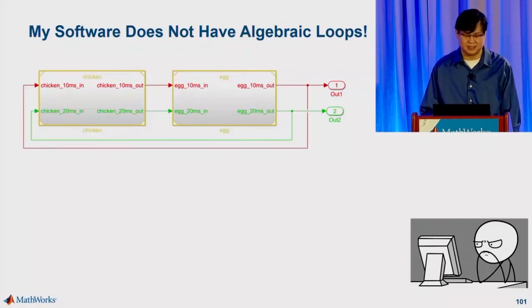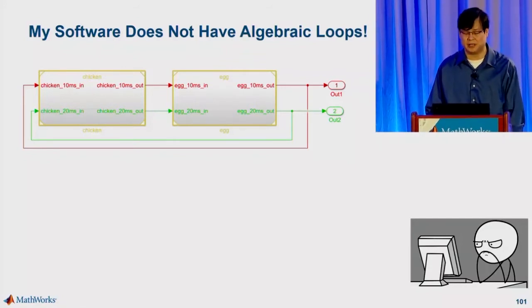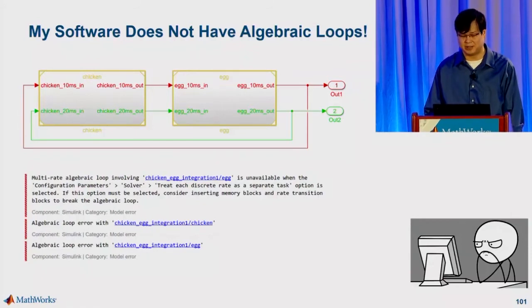Probably something like this. You just bring the components and connect them up in the top model. But a lot of times when you connect them in a loop like this, Simulink will just throw an algebraic loop error. Just like the old riddle, Simulink just can't figure out whether chicken should come before egg or vice versa.